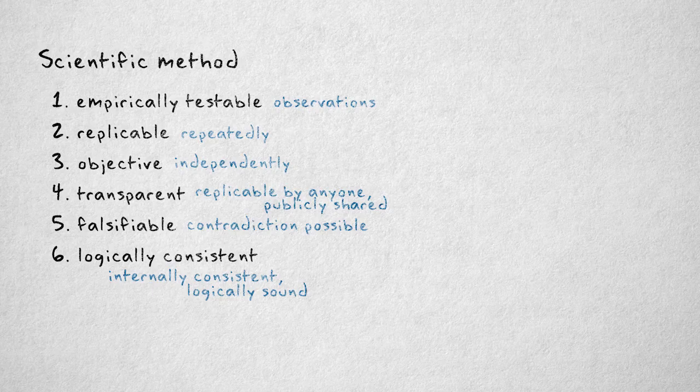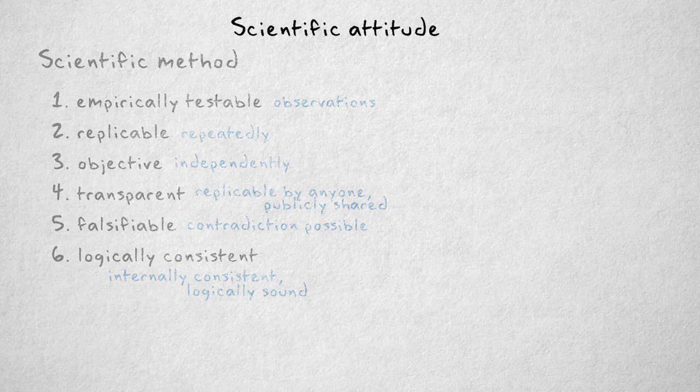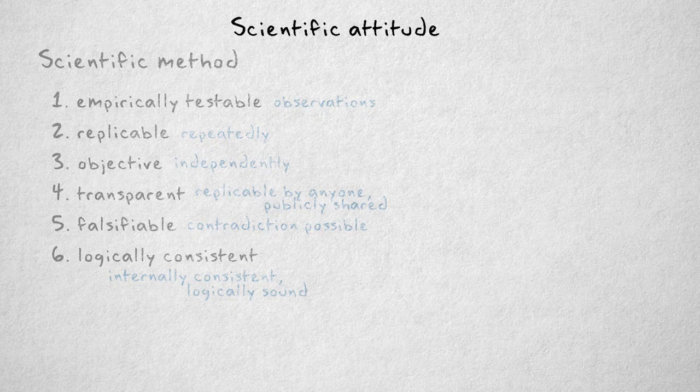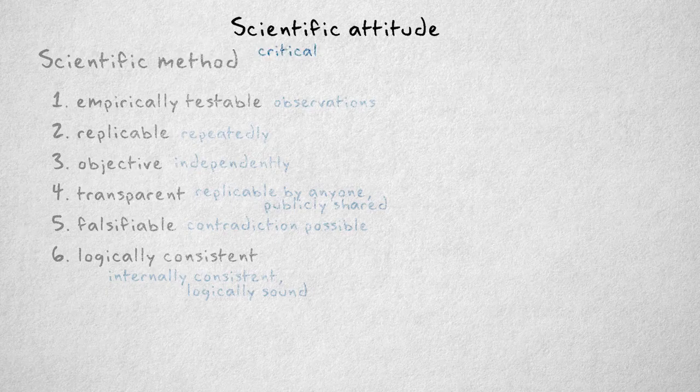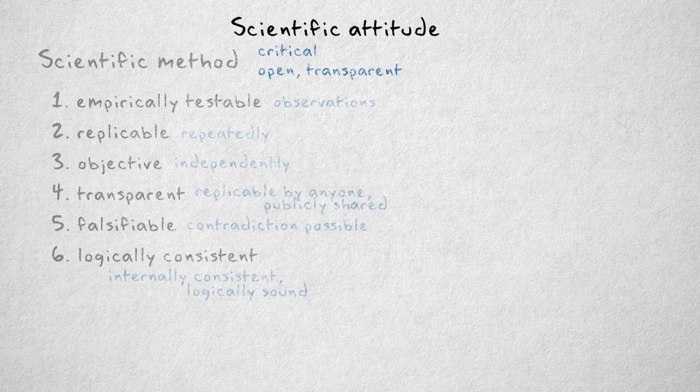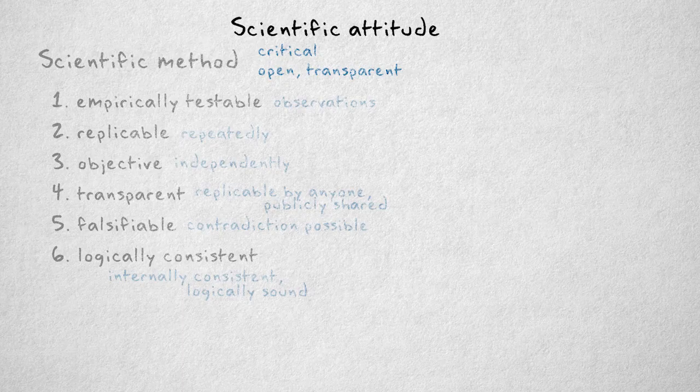One final point. The scientific method is only effective when it's used with the right attitude. In order to come up with better hypotheses, researchers need to be critical of their own studies and those of others. This means they have to be open and transparent. They have to accept critique and let go of their pet hypotheses if others provide better explanations. Only then can science function like an evolutionary system, where only the fittest or most plausible hypotheses survive.